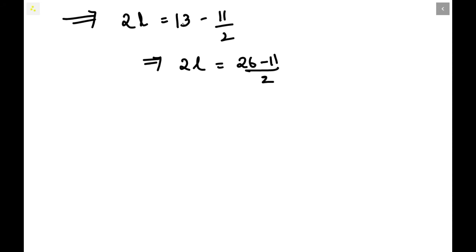When we take LCM, 13 can be multiplied with 2 on numerator and denominator to make the denominator equal. So it will be 26/2. Then 2L will be 26 - 11, over 2.